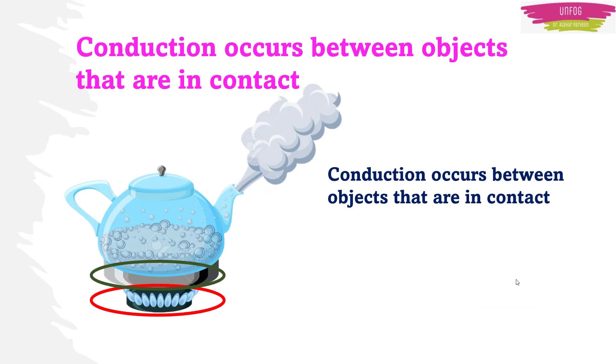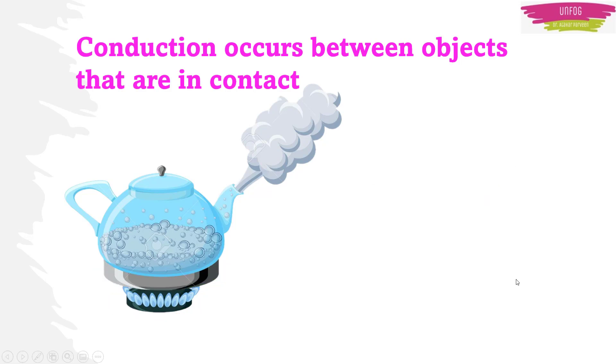Conduction occurs between objects that are in contact. For example, a tea kettle on a burner receives heat by conduction since the heating coil of the burner is in contact with the bottom of the kettle.